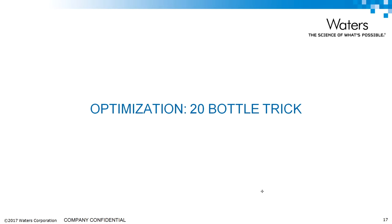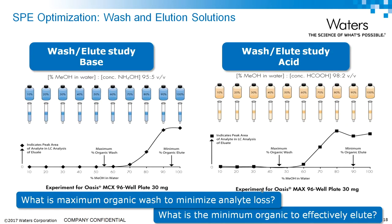Let's briefly talk about optimization. The key is to discover a condition where you use the strongest wash possible without eluting your analyte, and the weakest elution possible that still gives you high recovery. Looking at the plot on the left for one analyte, we increased the organic percentage of the elution by 10% across wells. At about 70% organic, the compound starts to elute — so you don't want to wash with more than about 50%. Maximum recovery is achieved at about 90%, so you'd probably want to elute at about 95%.